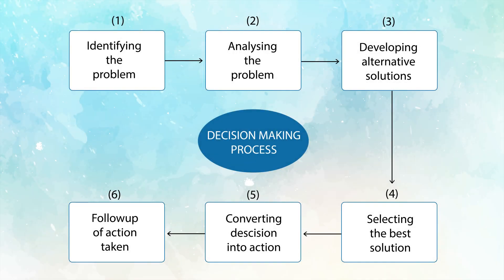The decision making process involves six main steps. Firstly, identifying the problem. Next, analyzing the problem. Developing alternative solutions. Selecting the best solution. Converting the decision into action. And last but not the least, follow-up for the action taken.